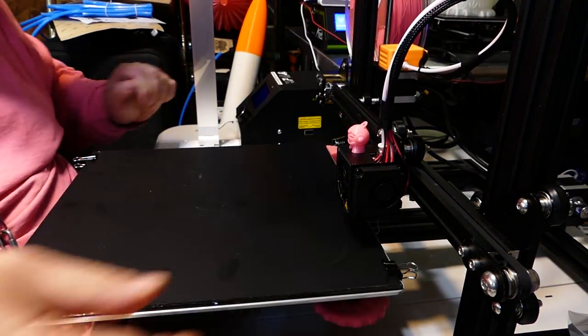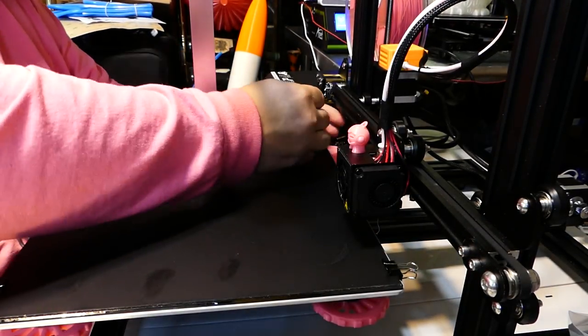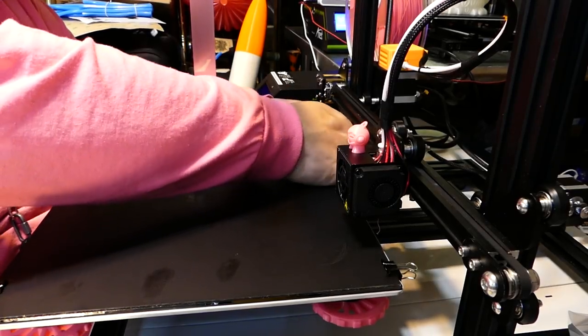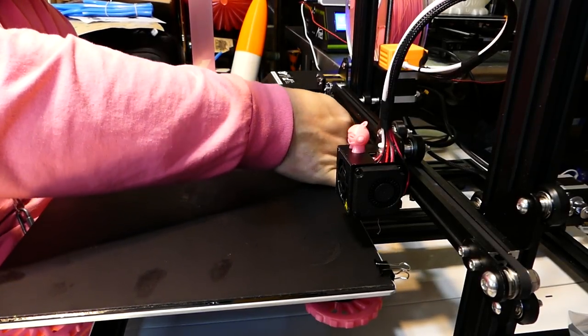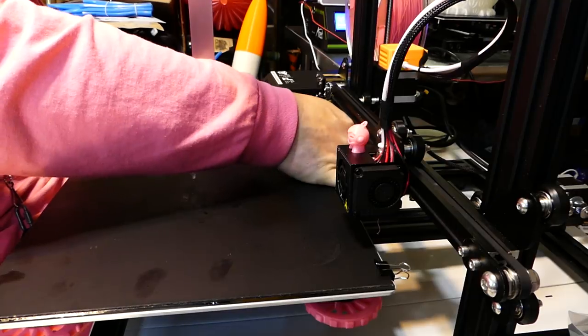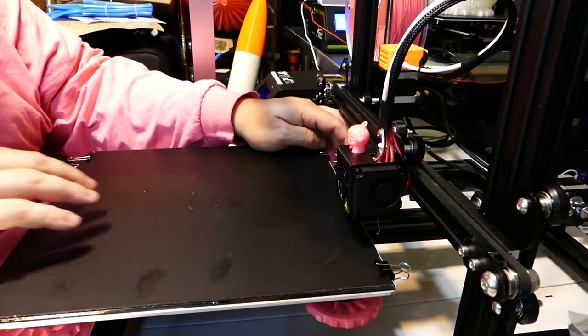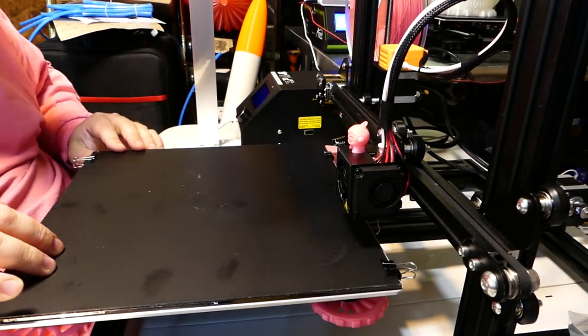Binder clips on the corners. Of course this binder clip can't go all the way to the corner because you have your heat bed connections there. But close enough. Okay. That is done.